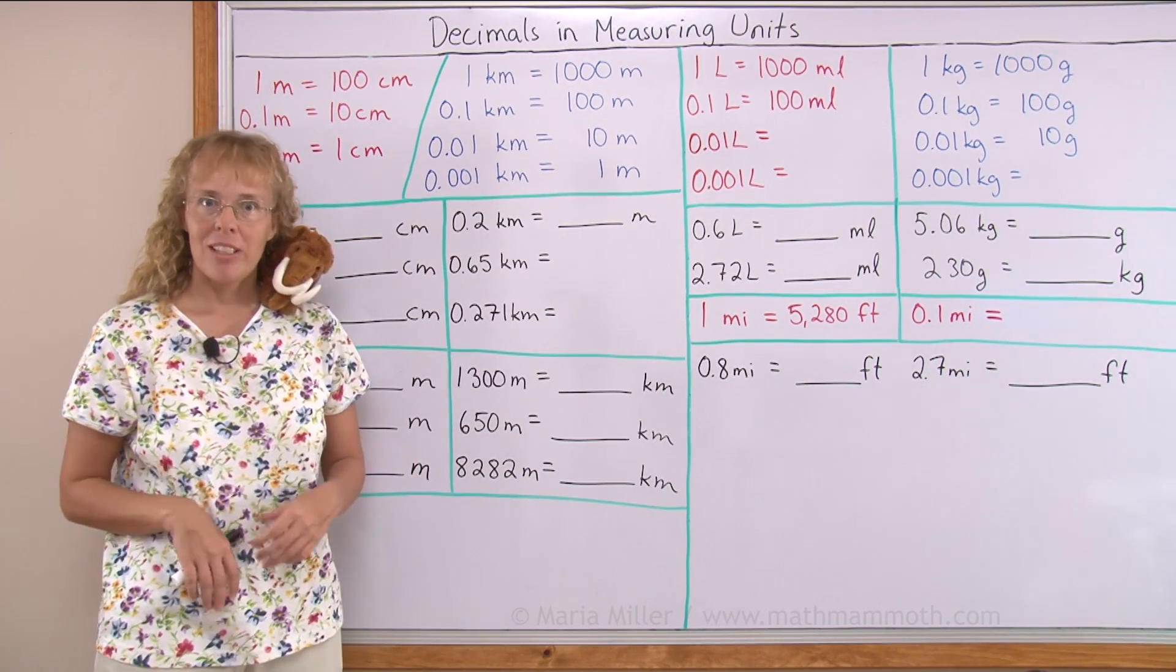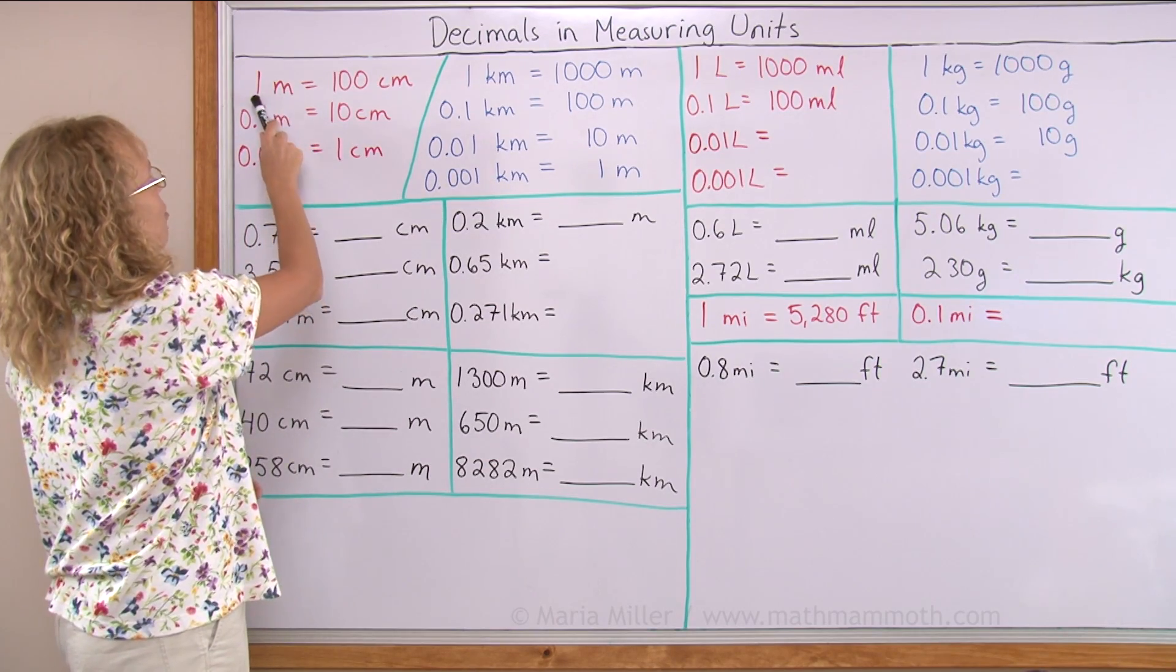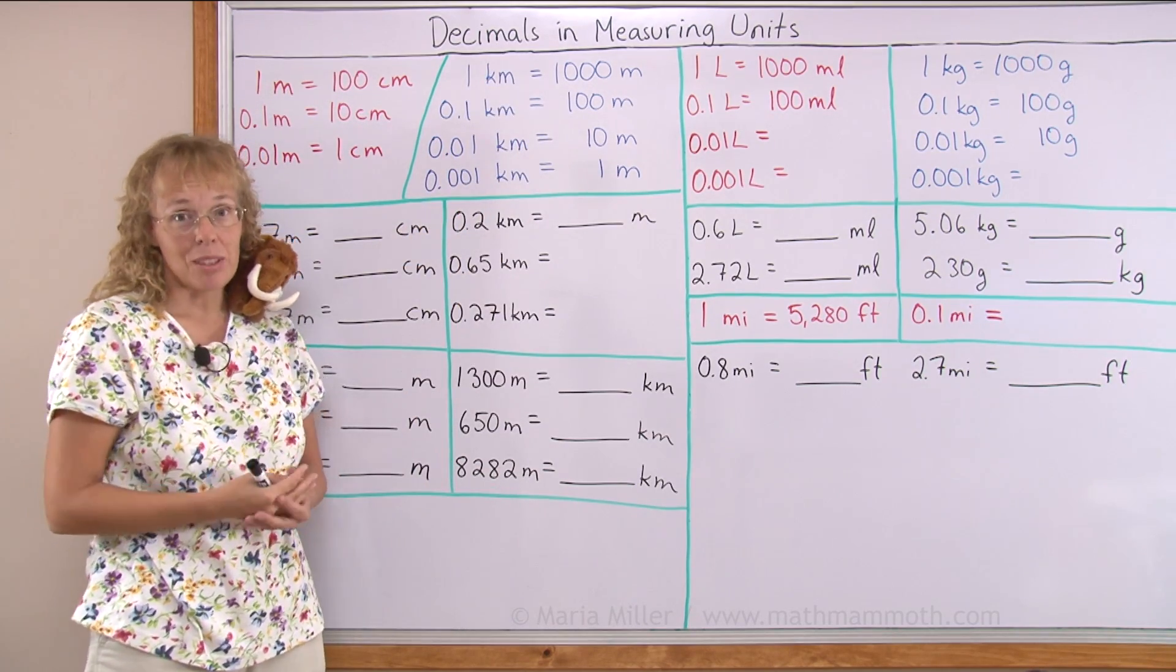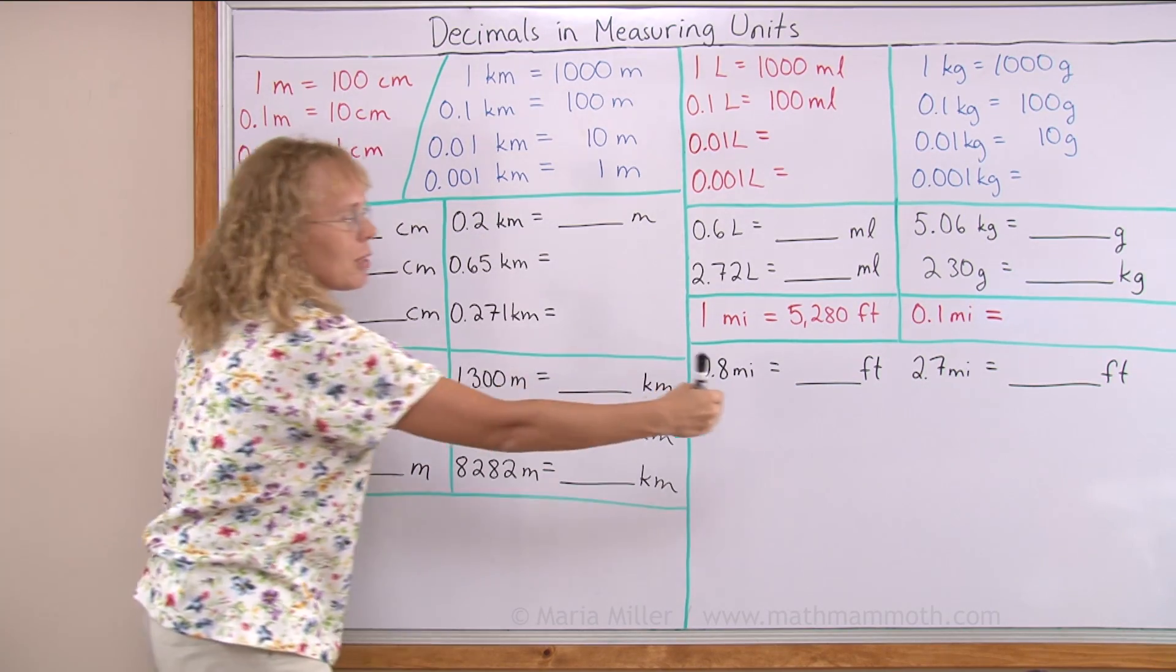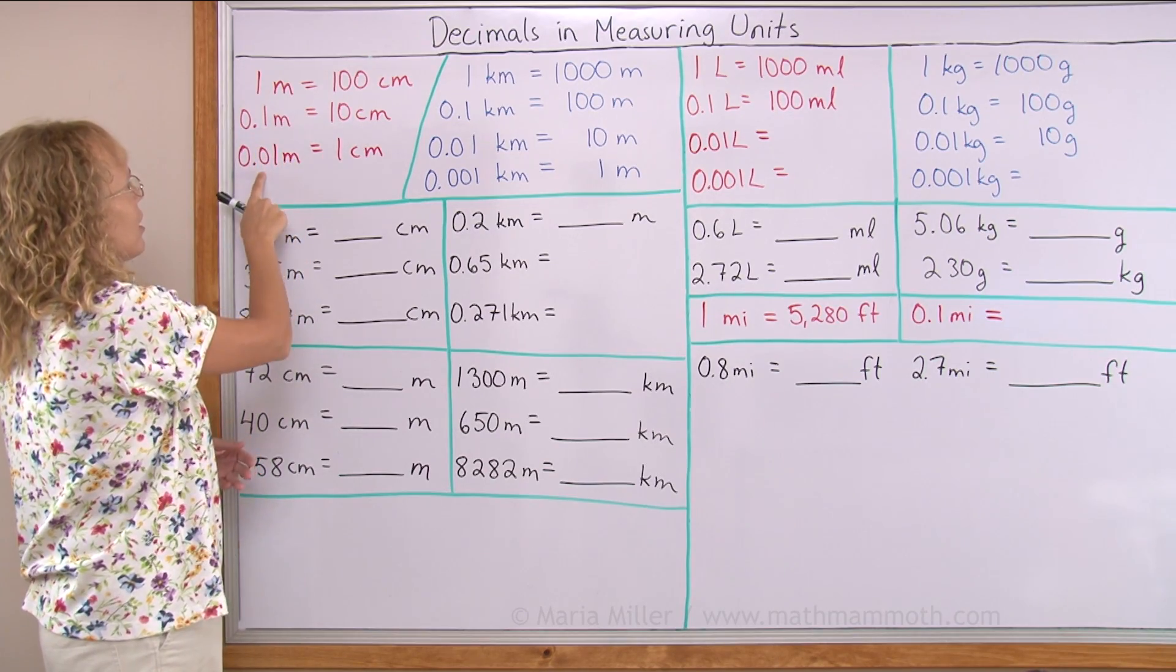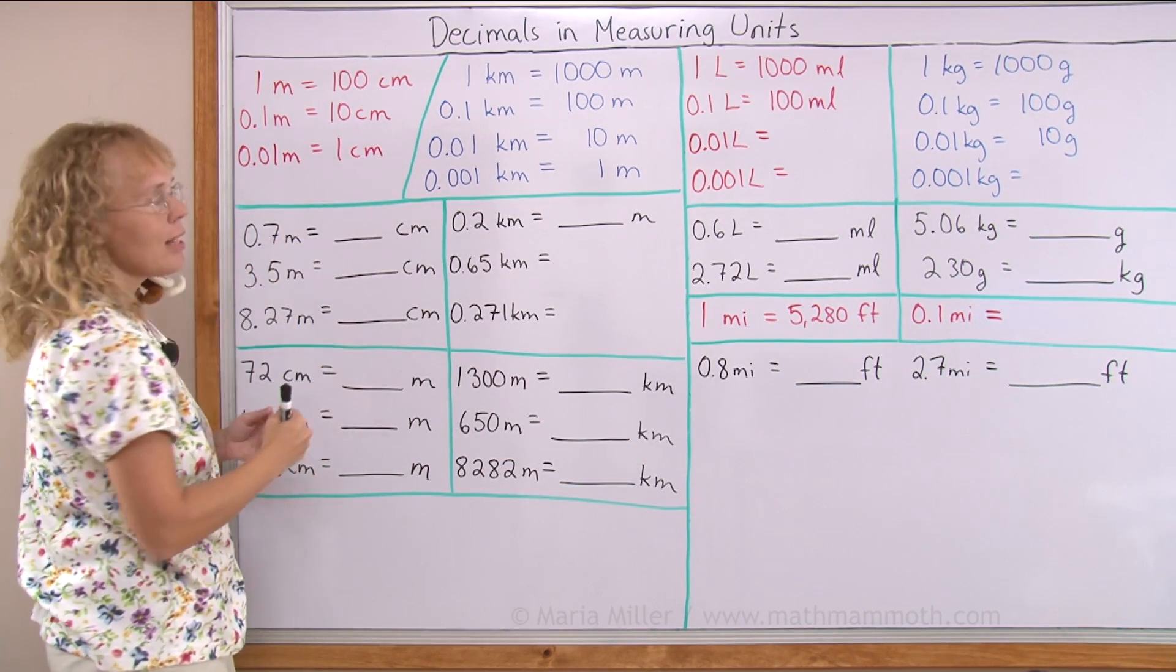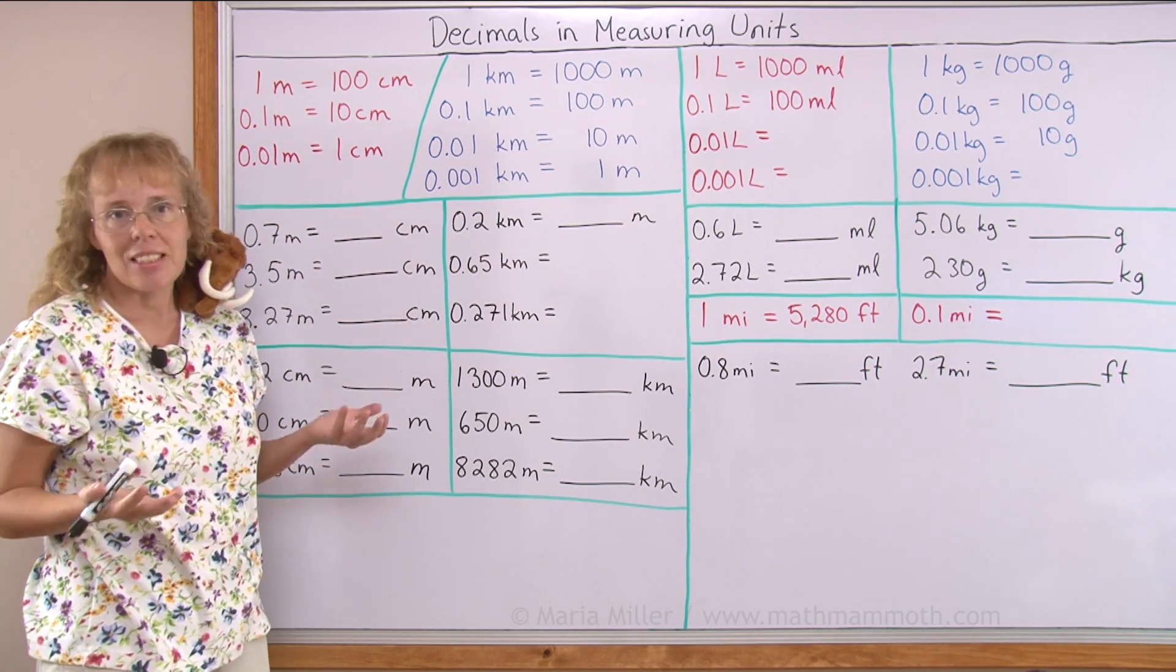I assume you are already very familiar with these facts, that one meter is 100 centimeters, or that one kilometer is 1000 meters. Now we're going to look at decimals. If one meter is 100 centimeters, then we can think of a tenth of a meter and a hundredth of a meter. One hundredth part of a meter would be just one centimeter. And then one tenth part of a meter would be 10 centimeters.